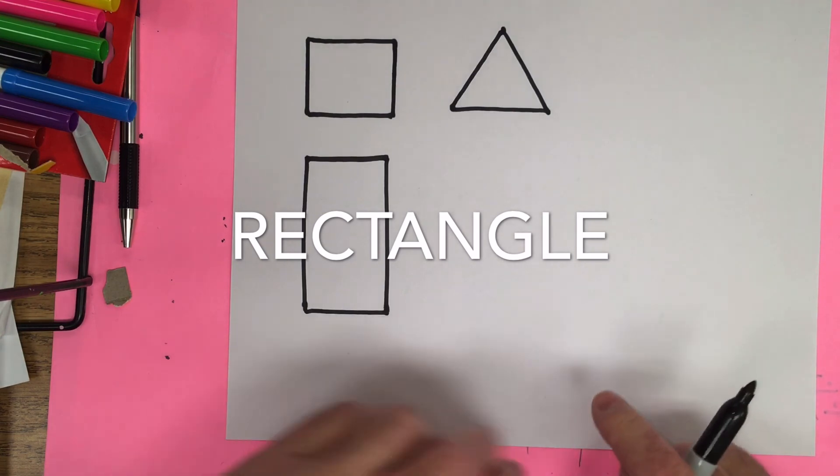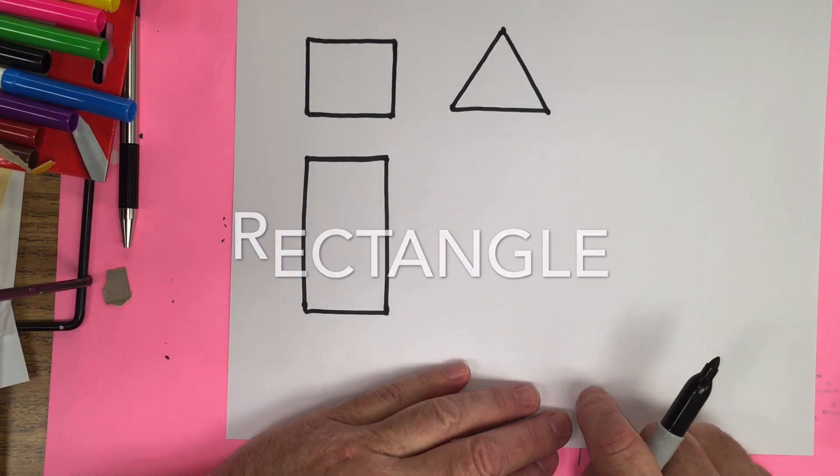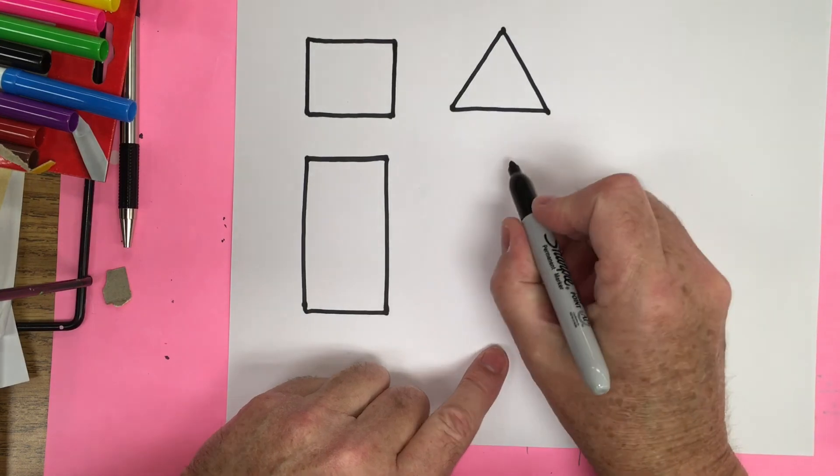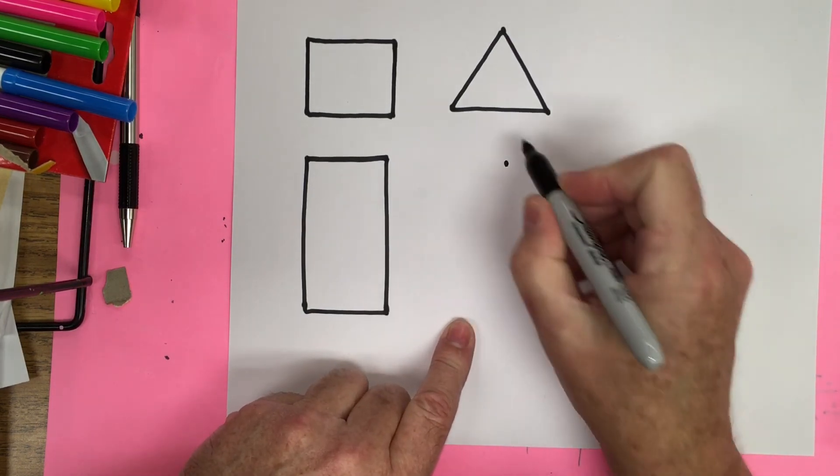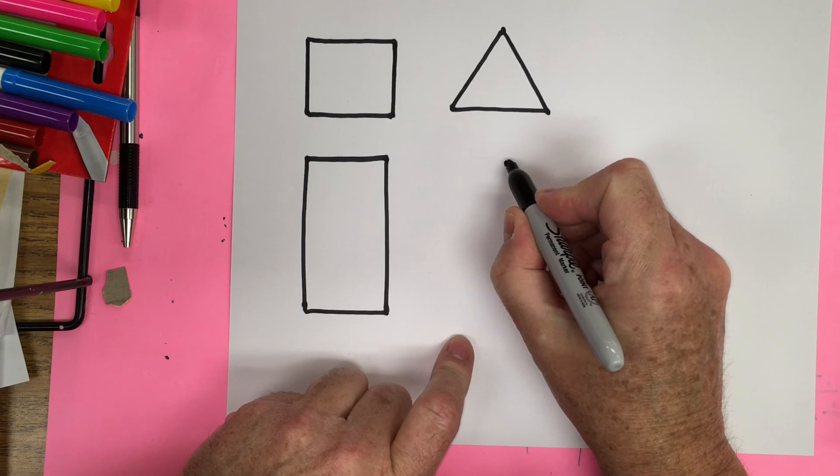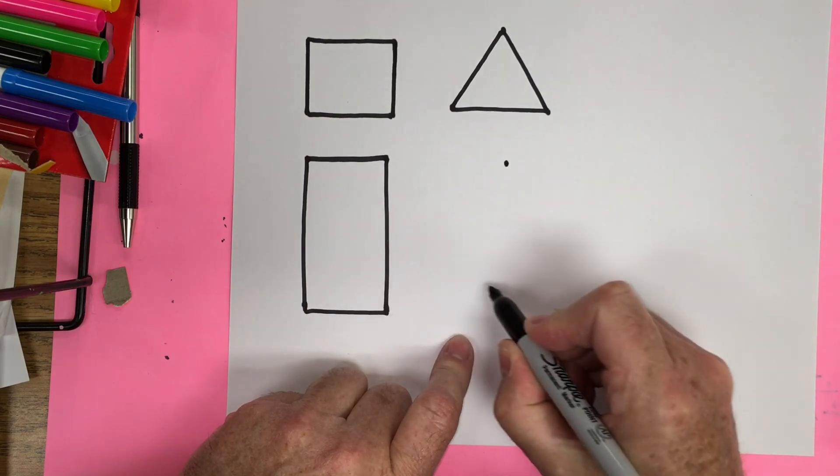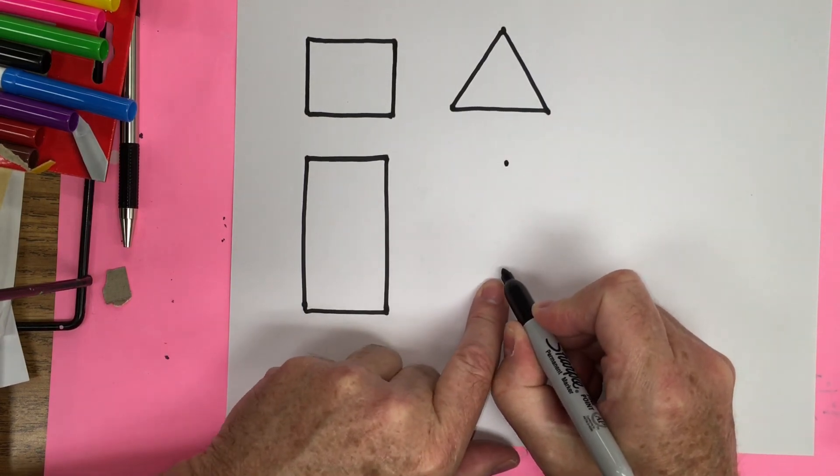The next shape we're going to make is a circle. For the circle, we're going to start with a dot and then we're going to come out and around and we're going to stop at a dot down below.